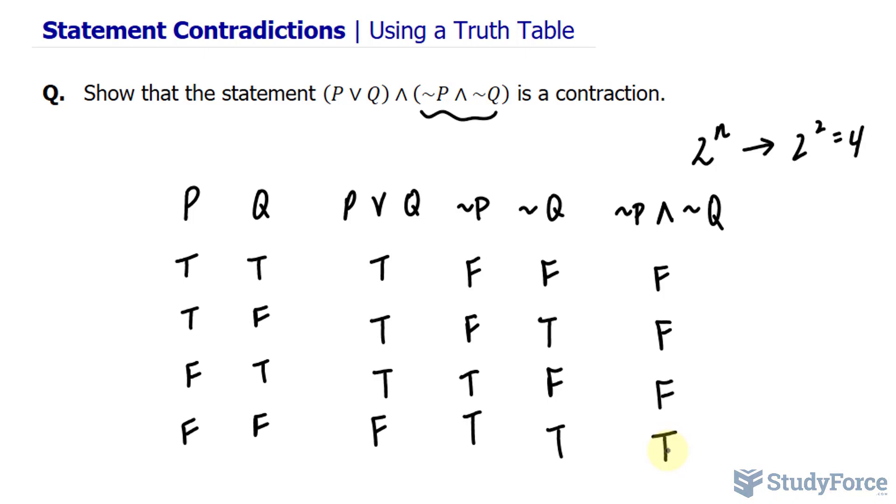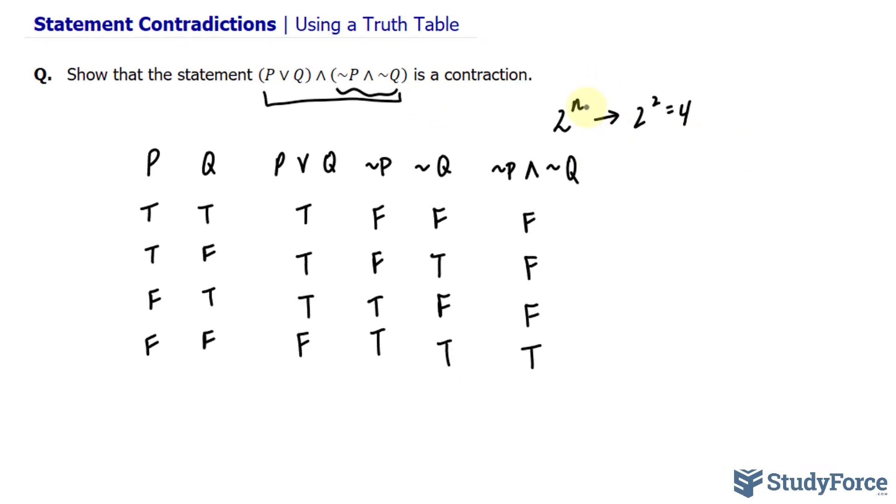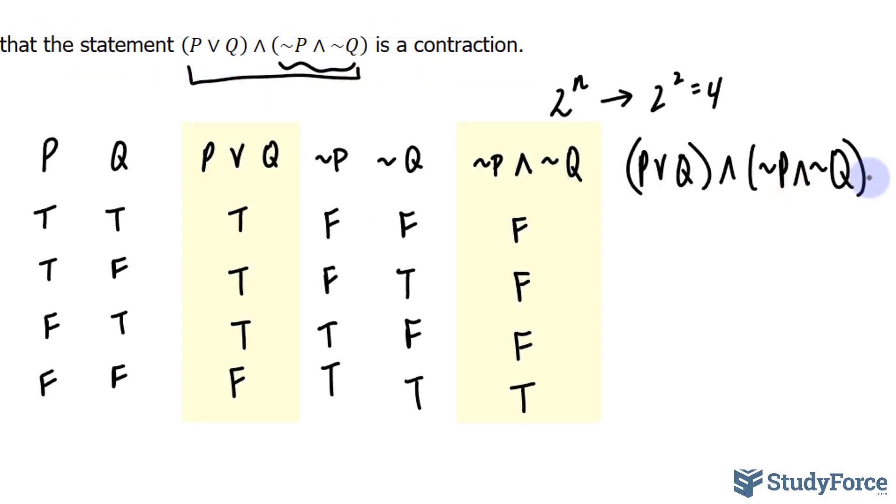Now we have to take the entire statement, and this will tell us whether this statement is a contradiction or not. So I'll write down the entire statement like this. And we will focus on two columns, the ones highlighted on your screen.